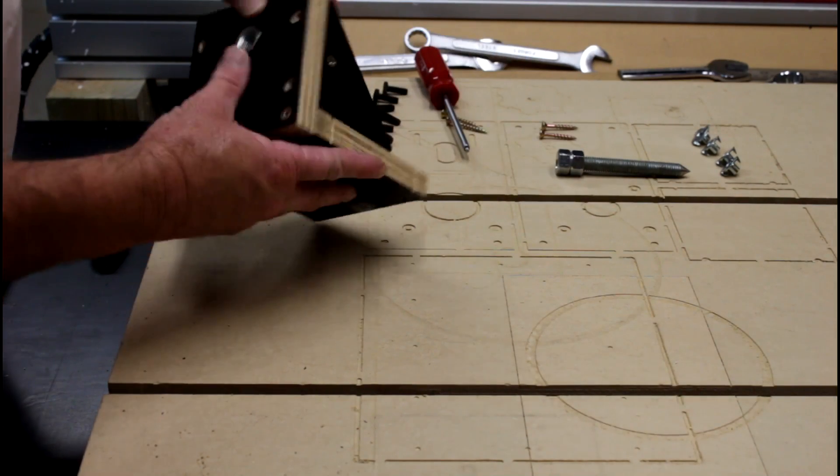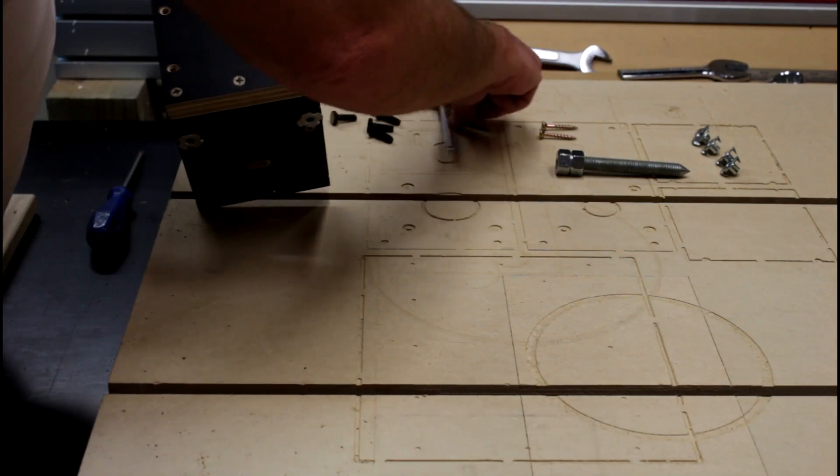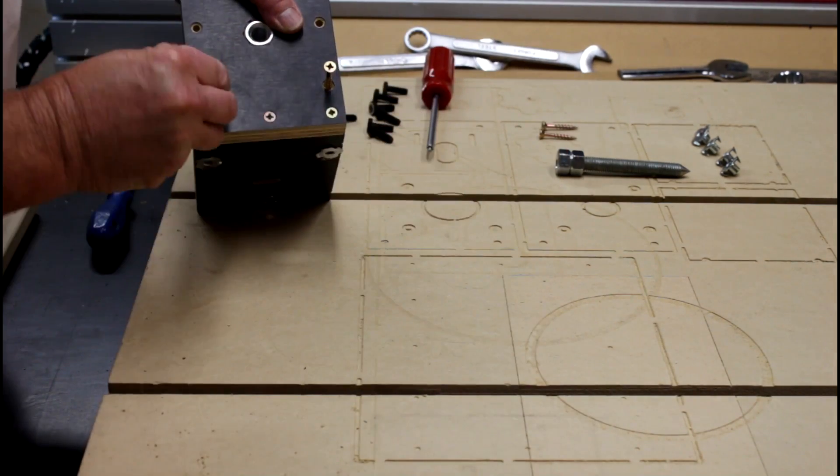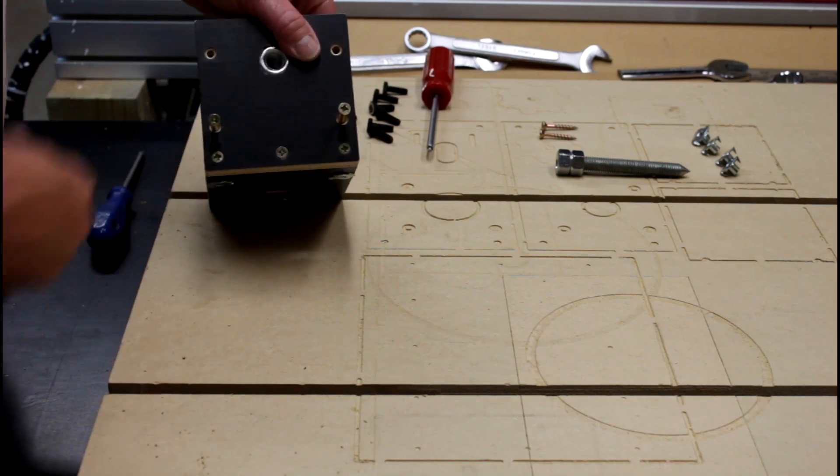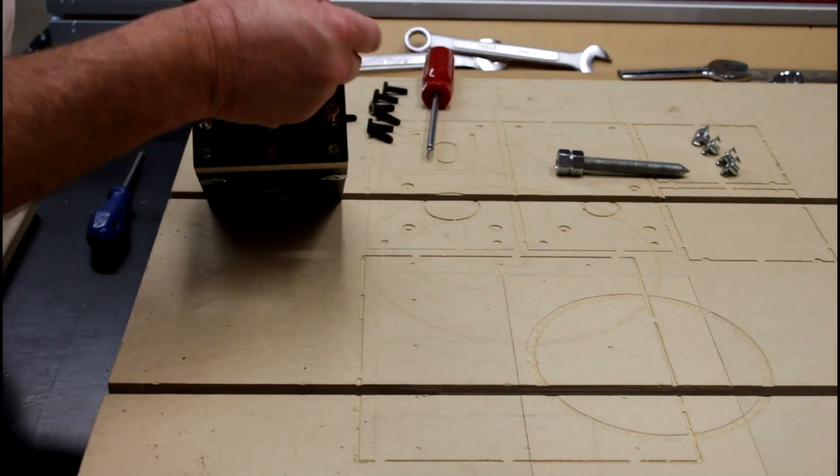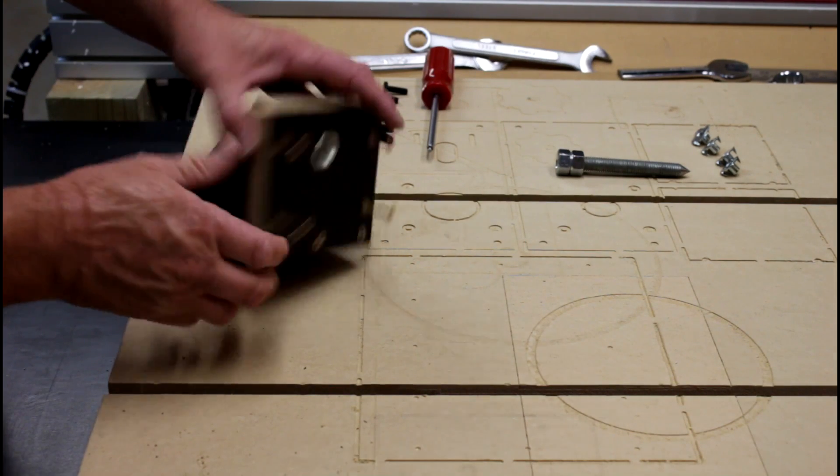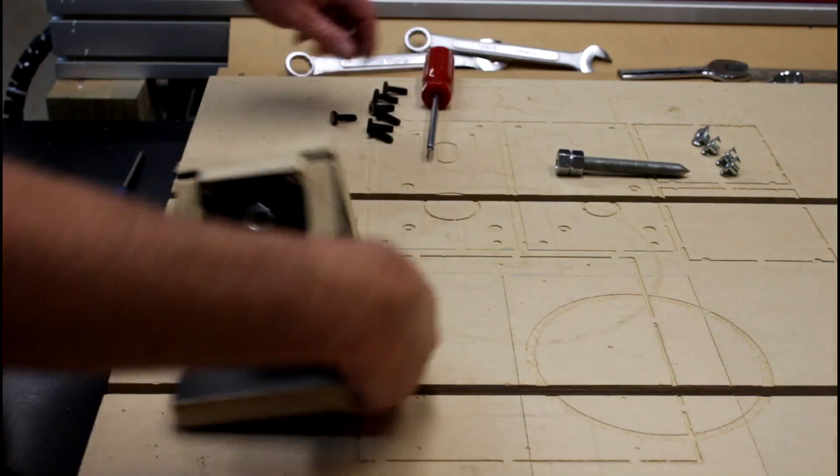Now just to make sure it doesn't come free, we've also got two screws here on the front. Again the two bottom ones here are one and a half inch long screws. The two upper ones are one and a quarter inch in length because we're in danger of coming through the end here.